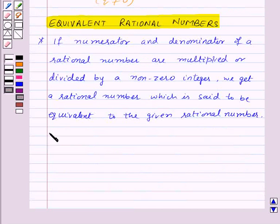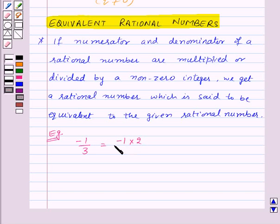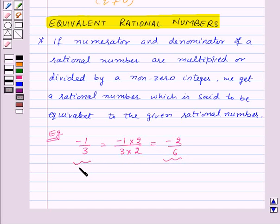For example, suppose we are given a rational number minus 1 by 3. Now let us multiply the numerator and denominator by the non-zero integer 2. We get minus 1 into 2 upon 3 into 2, which is equal to minus 2 upon 6. So the rational number minus 2 upon 6 is equivalent to minus 1 upon 3 — they are equivalent rational numbers.